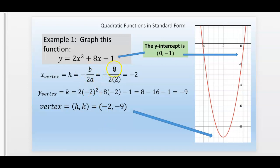So it's negative, and then 8 is on top, that's the b. And then 2 times a, a is also 2. Two times two is four. Eight divided by four is two. It's negative two.